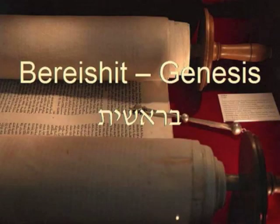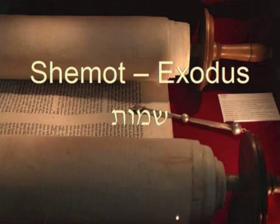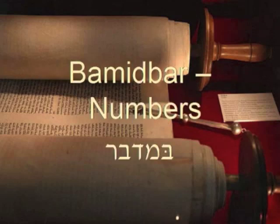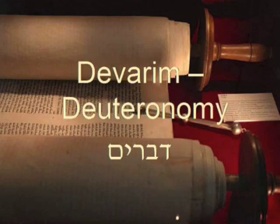The five books of the Torah were written by Moses and include Bereishit, known as Genesis, meaning 'in the beginning'; Shemot, known as Exodus, meaning 'names'; Vayikra, known as Leviticus, meaning 'and he called'; Bamidbar, meaning 'in the wilderness'; and Devarim, meaning 'words'.